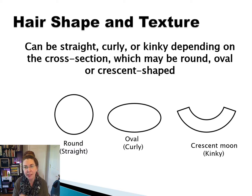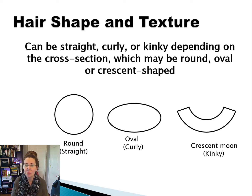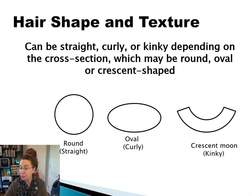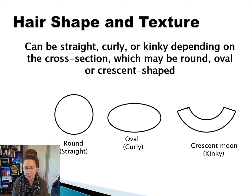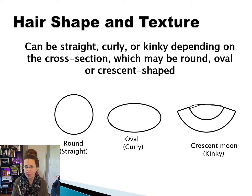What we're looking at is the shape of the hair in cross-section. Usually we're looking at something that's rounded, oval, or a crescent moon shape. That crescent moon shape is quite exaggerated, and in reality it would look something more like this, where we have a flattened edge.